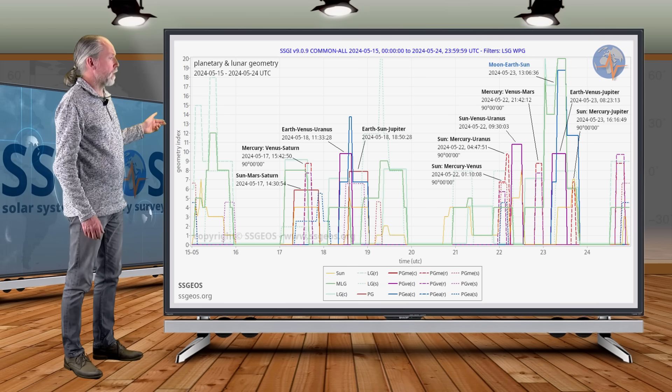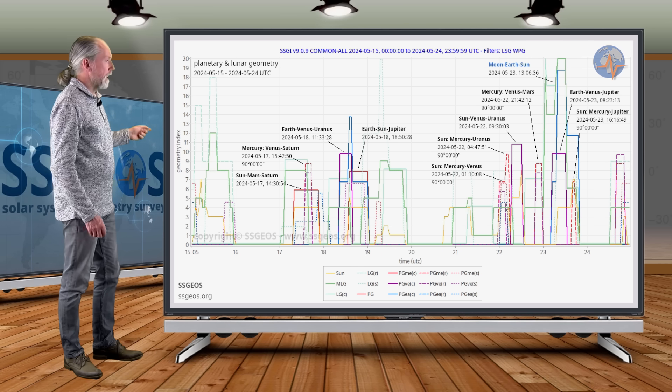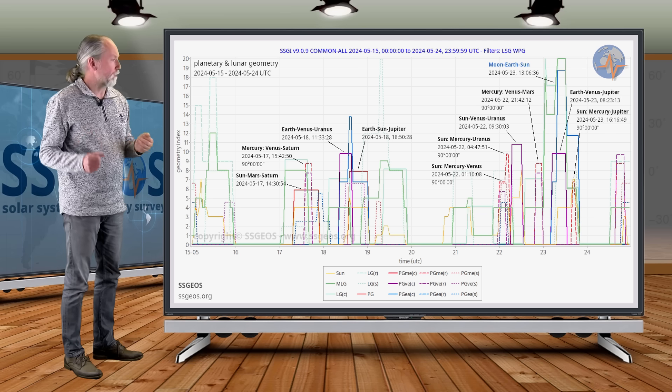On 17-18, we have Sun, Mars, Saturn in a conjunction first. That is not really a critical conjunction, by the way. Then we have Mercury, Venus and Saturn in a right angle. That's the only right angle in that convergence.